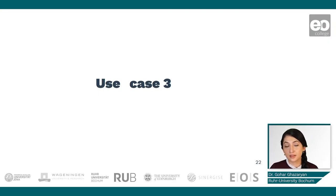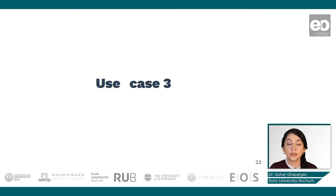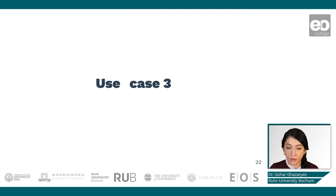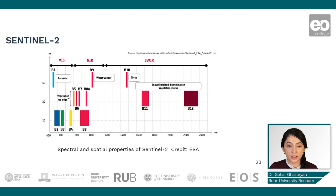In use case 3, we will use Sentinel-2 data and the random forest algorithm for classification of urban areas. But before moving to the code editor, let's have a look at some properties of the dataset.